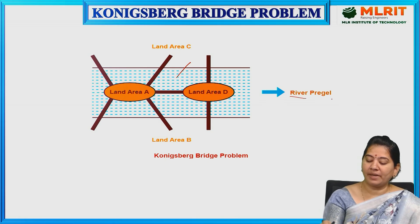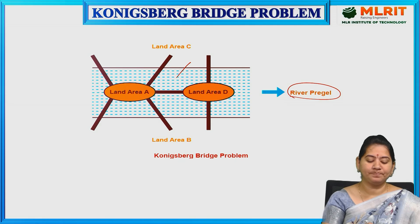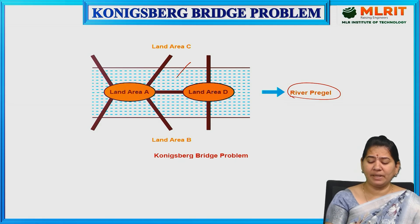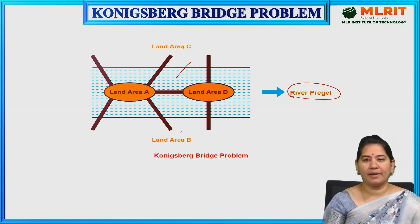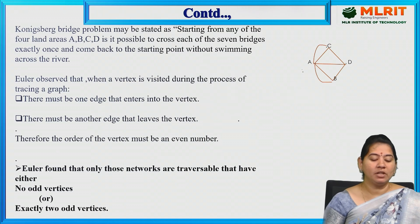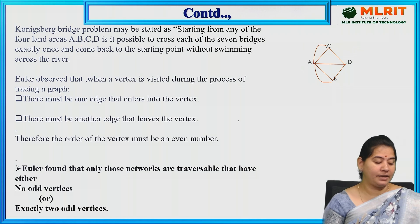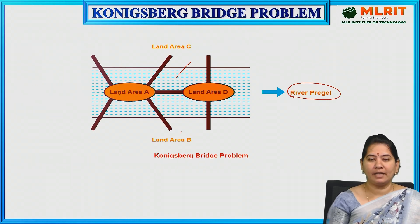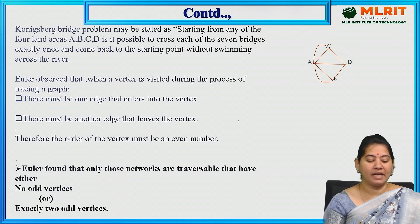The four land areas are named A, B, C, and D. The Königsberg bridge problem may be stated as: starting from any of the four land areas, is it possible to cross each of the seven bridges exactly once and come back to the starting point without swimming across the river?